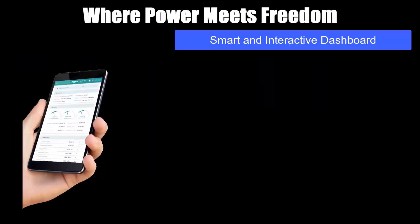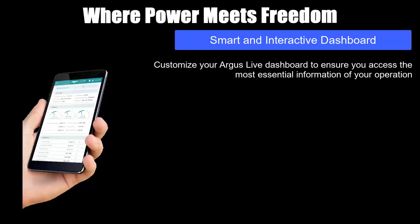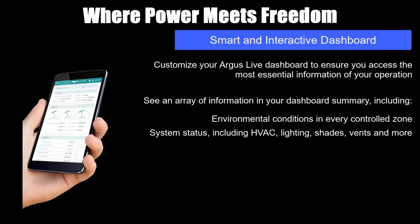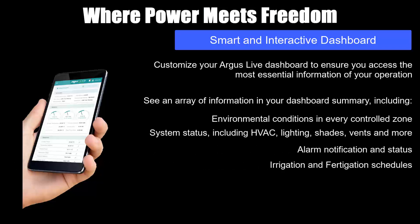Smart and responsive dashboard. Customize your Argus Live dashboard to ensure you can access the most essential information of your operation. See an array of information in your dashboard summary including environmental conditions in every controlled zone, system status including HVAC, lighting, shades, vents and more, alarm notification and status, irrigation and fertigation schedules, and outside weather information.